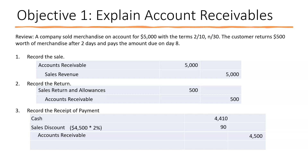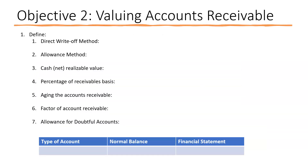We've seen those entries in previous chapters. We're focusing on accounts receivable in chapter 8. Now we'll get into valuing accounts receivable — this is new. We look at two methods: the direct write-off method and the allowance method.